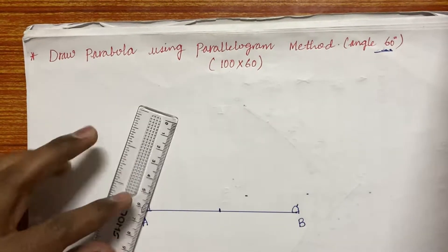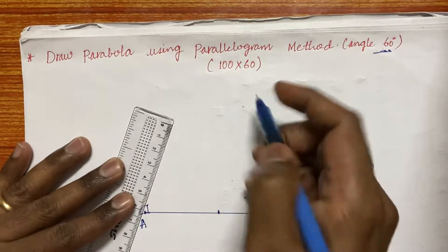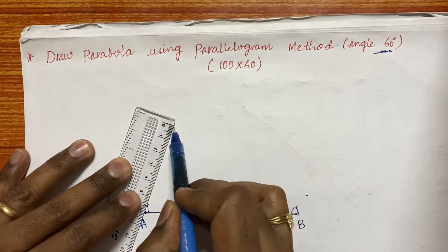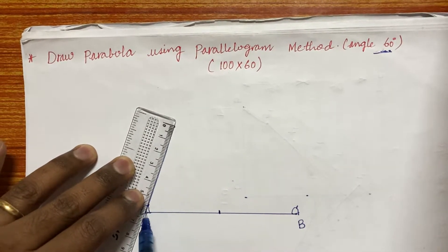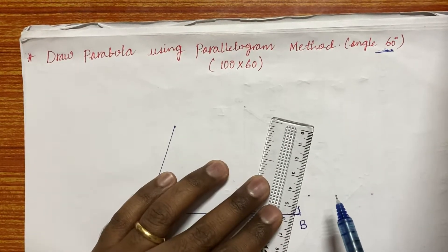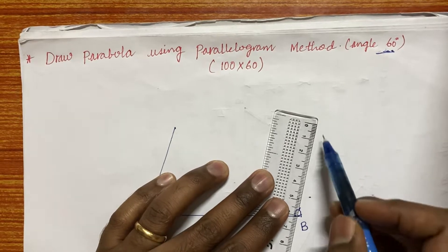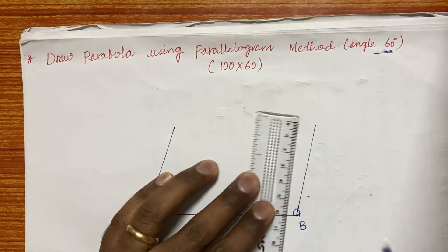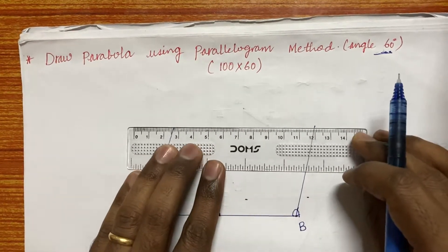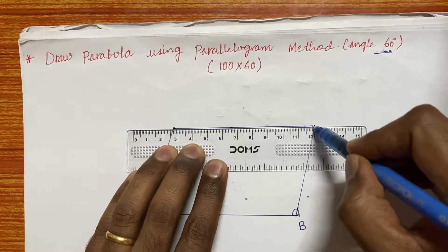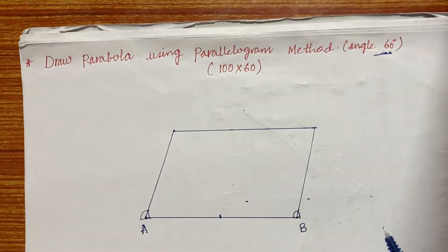Now measure the distance of 60 along this A and the 60 degree angle and 60 millimeter. Draw a line from A as well as draw a line even from point B. Please do work out this problem using instruments, I mean the rafter itself, because we need to draw the parallel lines in certain cases.